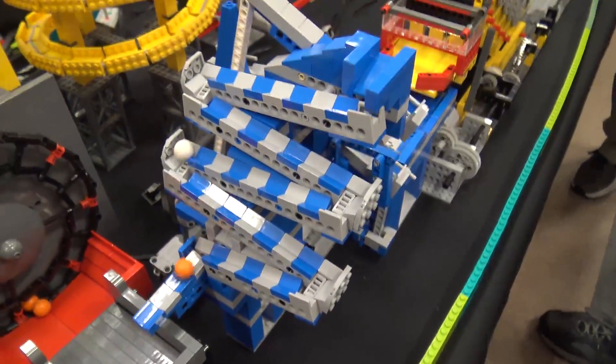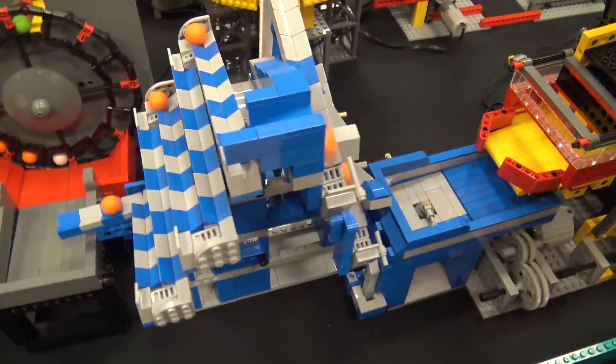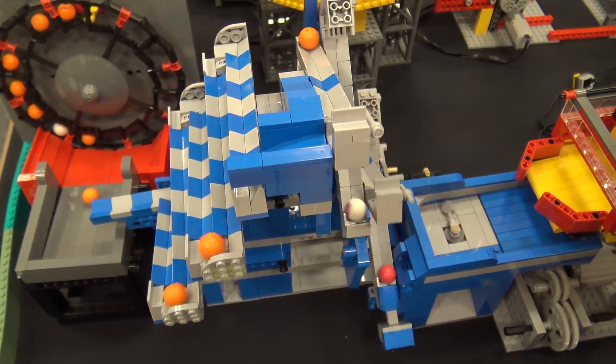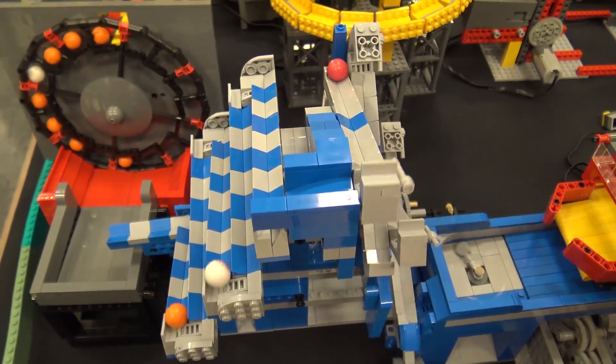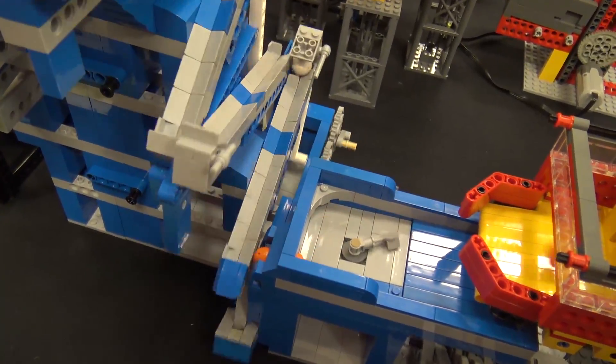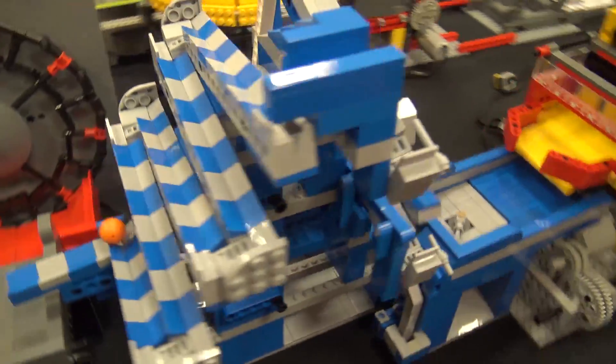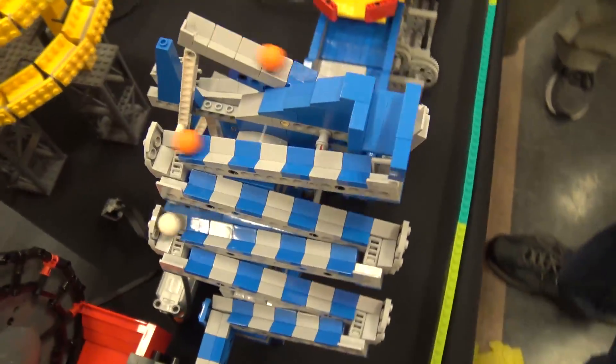And then on the end, my newest module, I call this Seesaw. This is based on an idea that Josh David had. He posted one similar; I couldn't really see all the aspects of it, but I liked the teeter-totter motion. So this is my take on that type of motion, and it's my newest one and it's actually running really well for a first-time show.